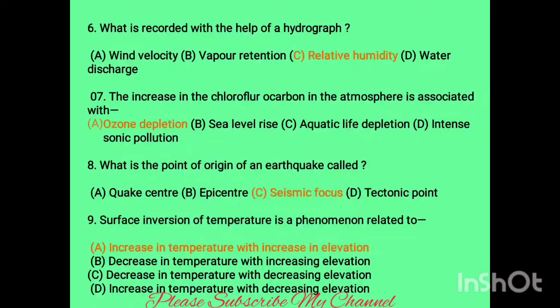Question six: what is recorded with the help of a hydrograph? Options are wind velocity, vapor retention, relative humidity, and water discharge. Relative humidity is recorded with the help of a hydrograph — option C.